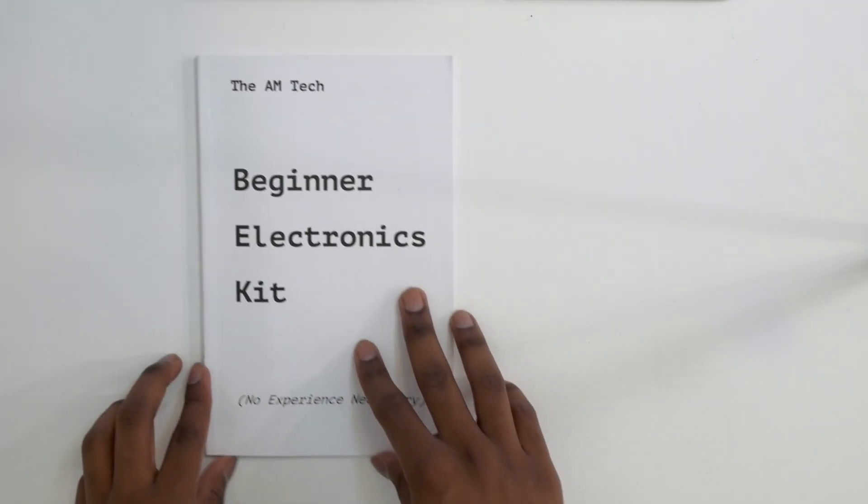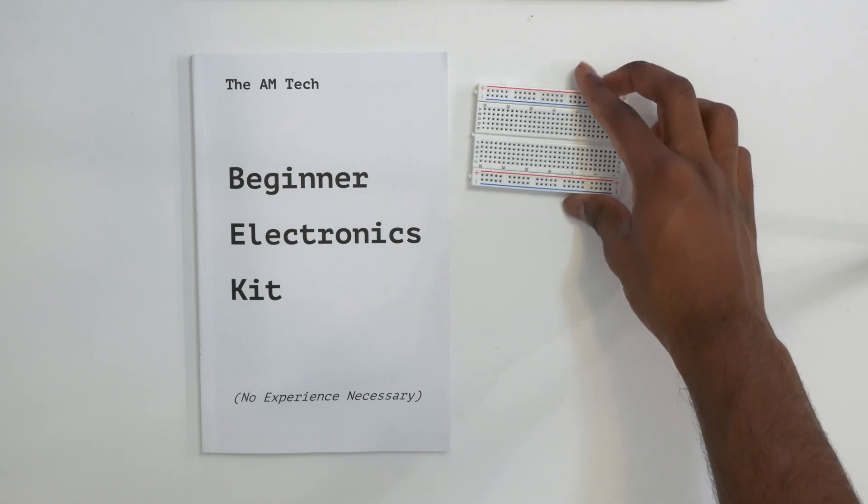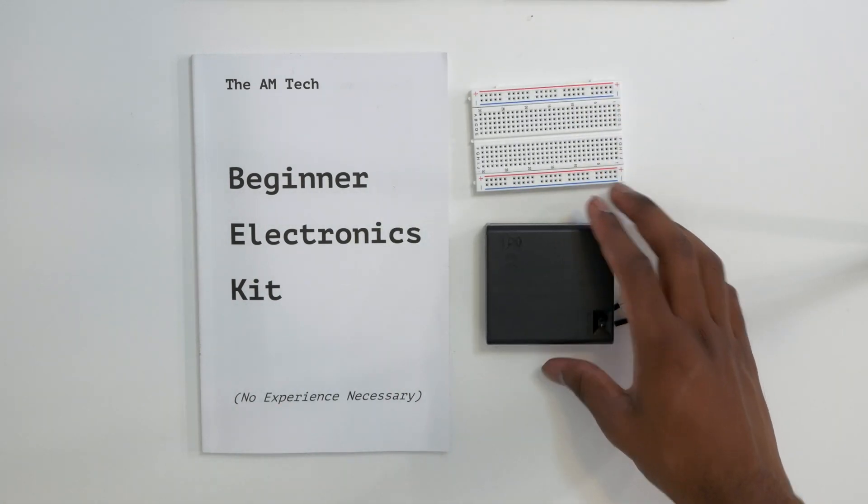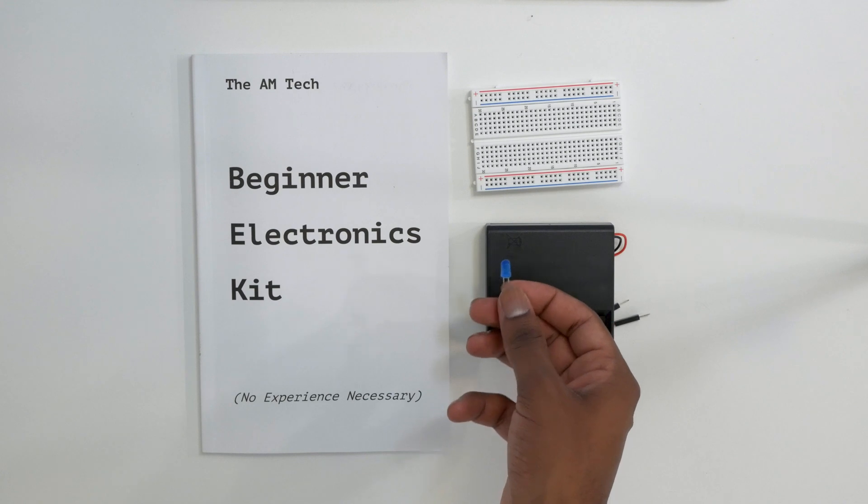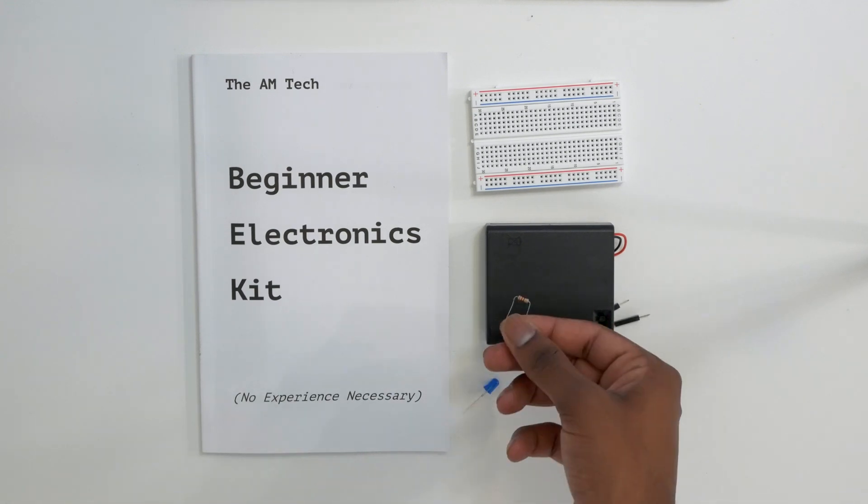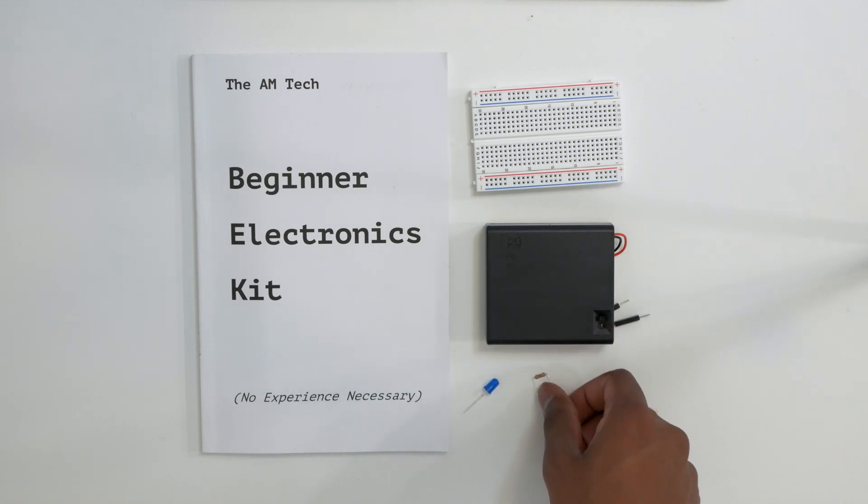So all you're going to need for this project is your booklet, your breadboard, your power pack, a blue LED, and then a 220 ohm resistor, which the color code for that is red red brown. Now all these components come in your kit. If you don't have your kit, you can go ahead and use your own components, but this is all you're going to need for this project.